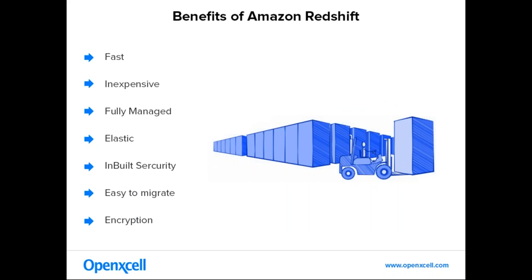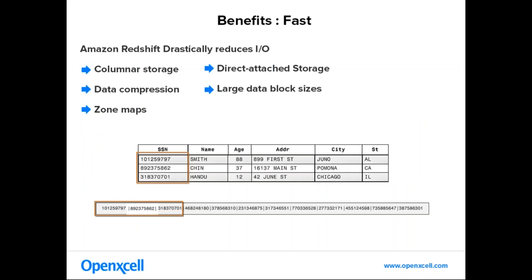There are important benefits of Amazon Redshift: it is extremely fast, inexpensive, fully managed, elastic, provides inbuilt security, is very easy to migrate, and also provides encryption of your data. Let's go through each one in detail. First, why is Amazon Redshift fast? Amazon Redshift uses columnar storage, data compression, zone maps, direct attached storage and large data block sizes to reduce IO operations. Columnar storage is a technology which optimizes analytic query performance drastically by reducing IO operations. It uses massively parallel processing and distributes tasks on different nodes, making it extremely fast.